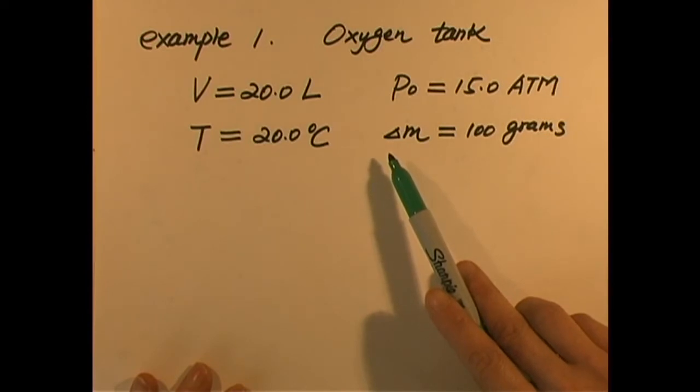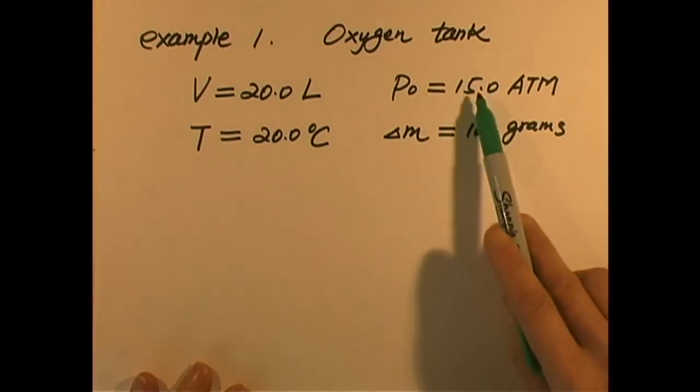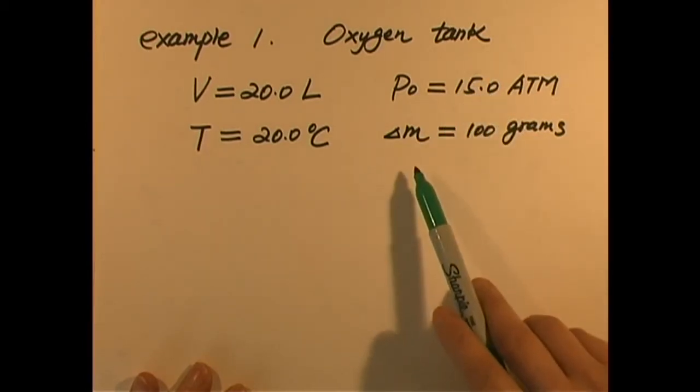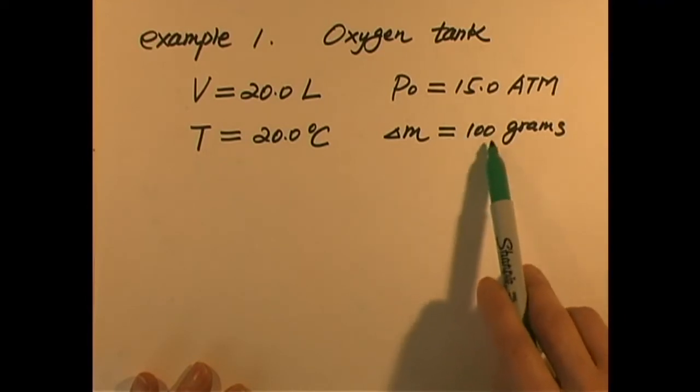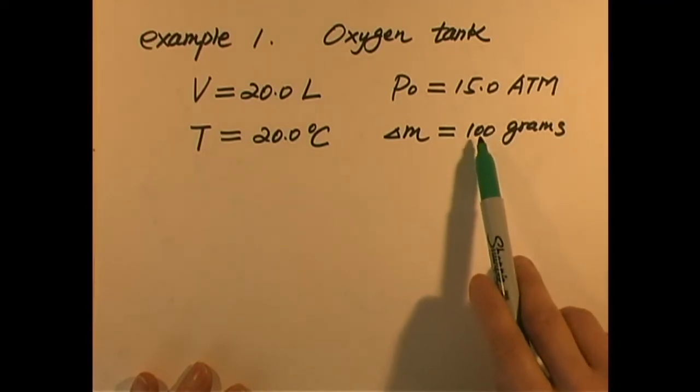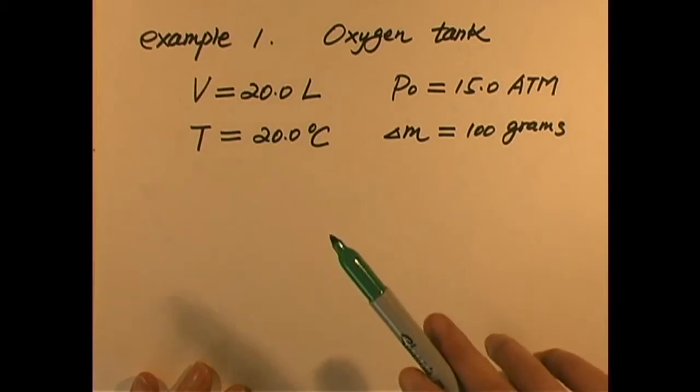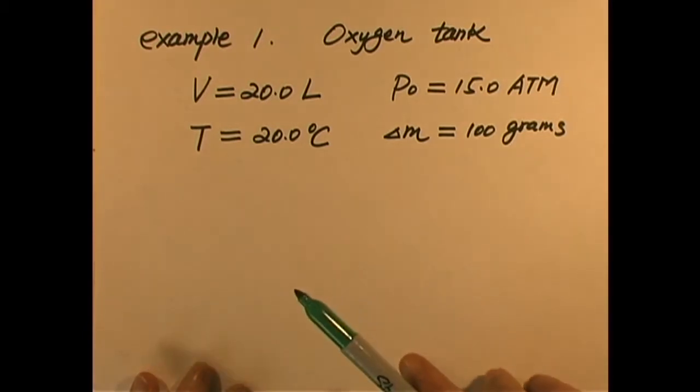The question now is what is the pressure now? Obviously, if we use all the oxygen, then the pressure will be either zero, or if we're open to the atmosphere pressure, that will be just 1 atm. But now, obviously, it will be less than 15 atm, and how much is it? Certainly depends on the amount of mass we used. Now we use 100 grams. How do we solve this problem?